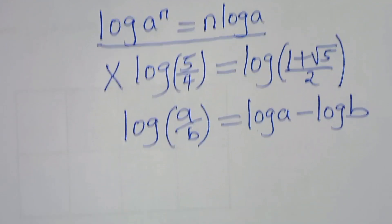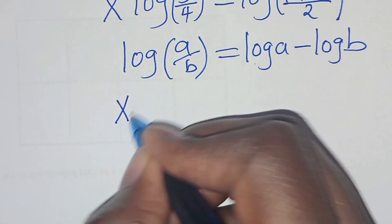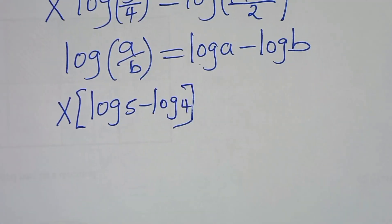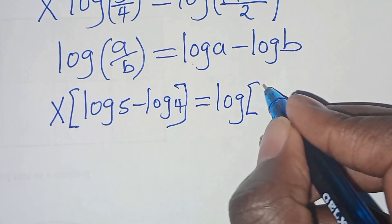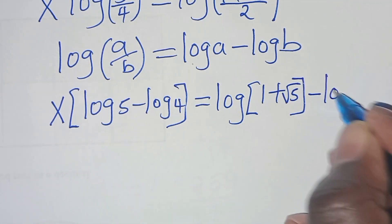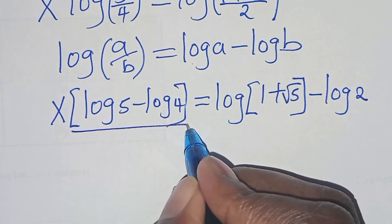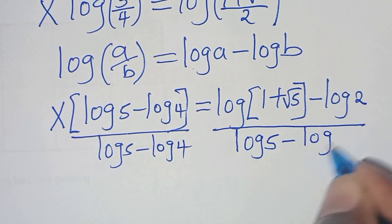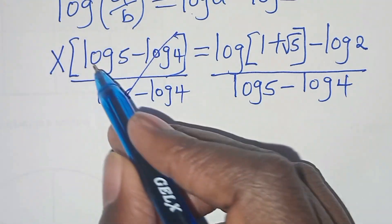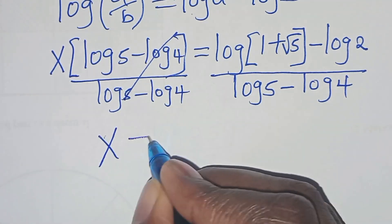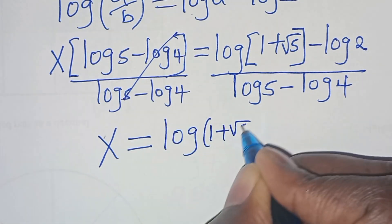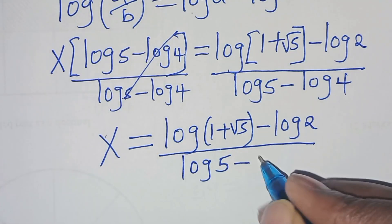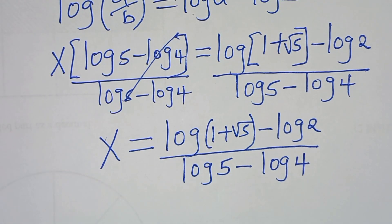Applying the logarithm quotient property, we have x times (log 5 minus log 4) equals log(1 + √5) minus log 2. Dividing both sides by (log 5 minus log 4), x equals [log(1 + √5) minus log 2] divided by [log 5 minus log 4].